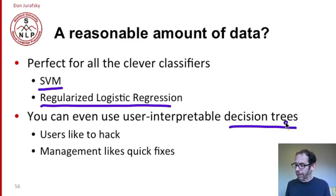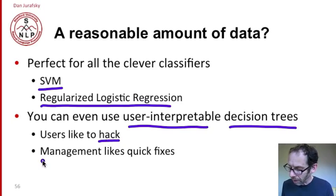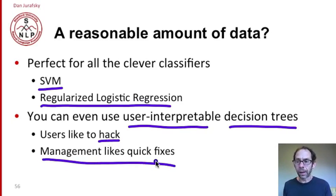Decision trees have advantages and disadvantages, but a big advantage is they are user-interpretable. People like to be able to modify a rule or hack on a classifier. It's very easy to modify a decision tree, add a rule, or change a threshold by hand. It's much harder to do that with an SVM or logistic regression. Management likes quick fixes.